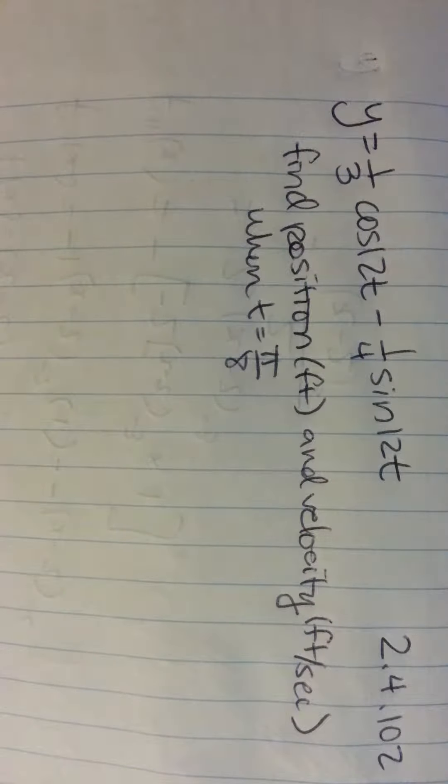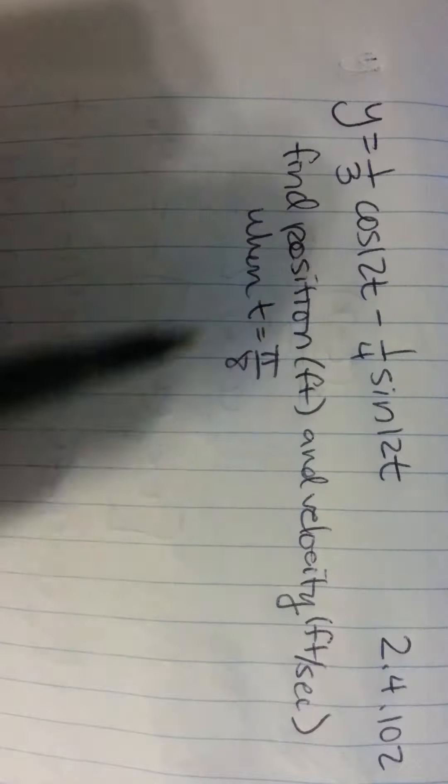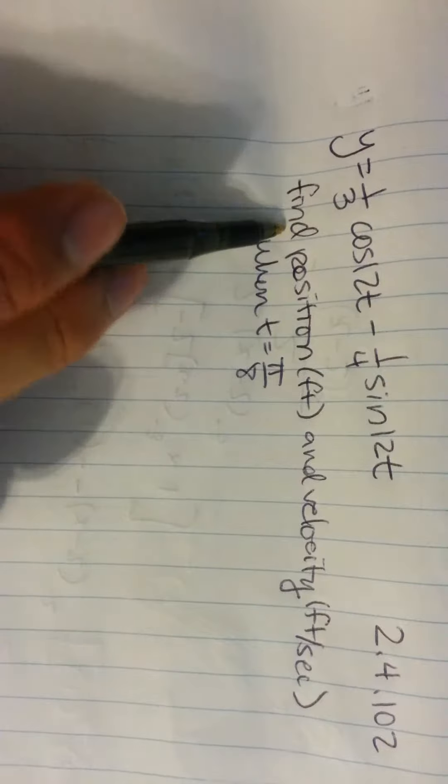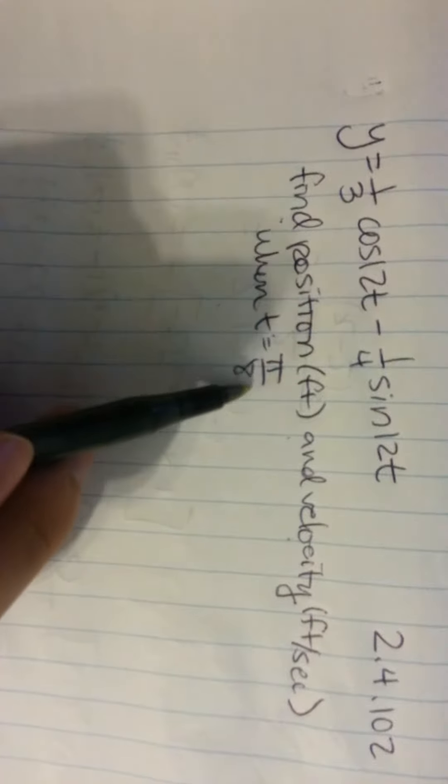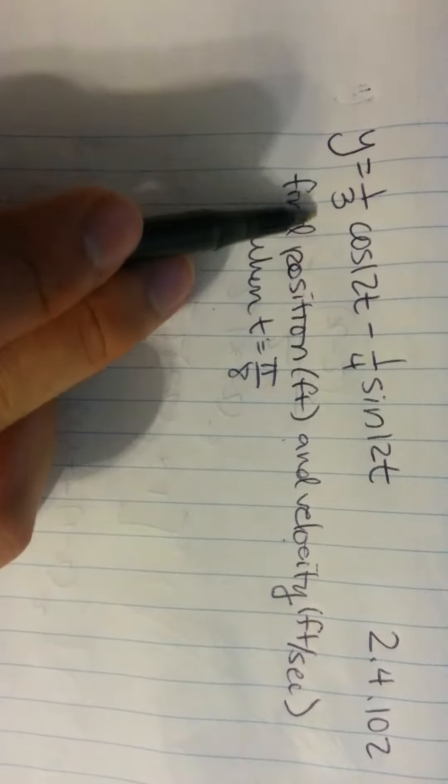I'm doing problem 102 from section 2.4. The question asks you to find the position in feet and the velocity in feet per second when t equals π over 8 of this function.